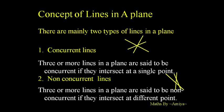There are mainly two types of lines: concurrent lines and non-concurrent lines. Within non-concurrent lines, we have two other types — one is parallel and another one is non-parallel.